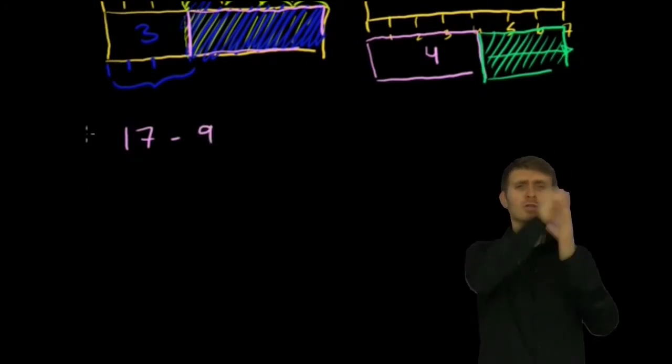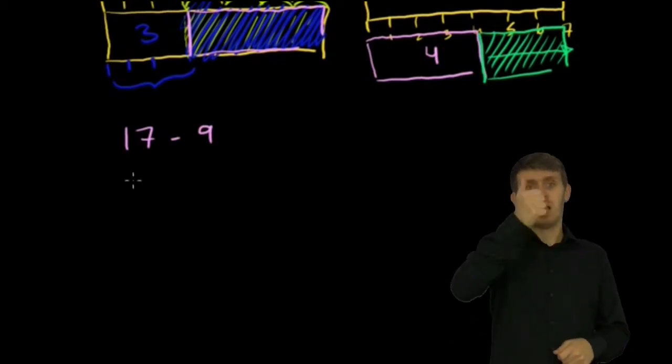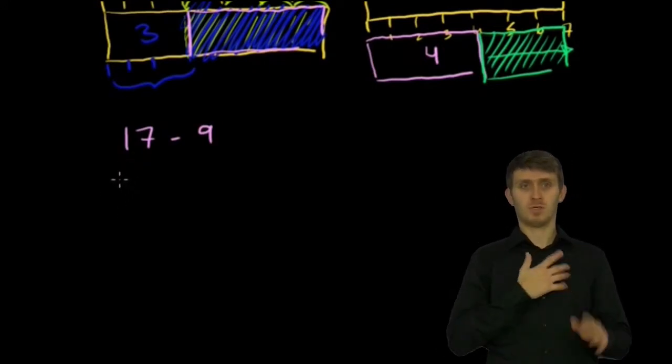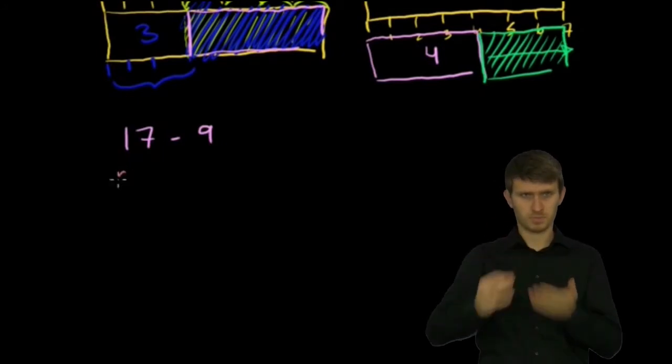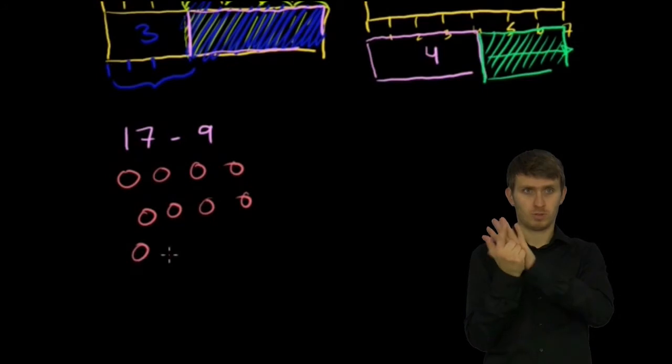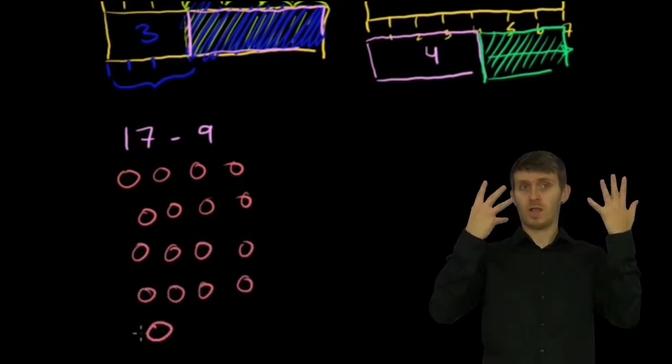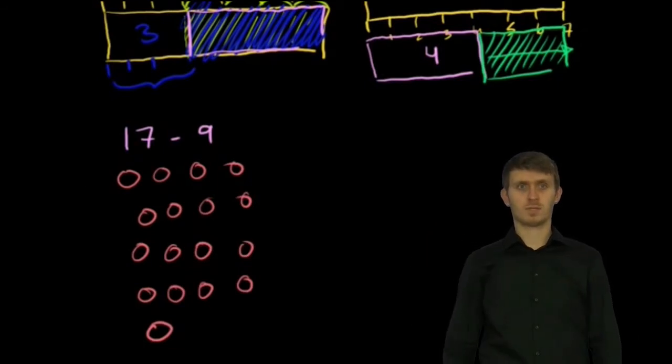So let's do 17 minus 9. So just like everything else, there's two ways we could have done it. The more slow way is you could draw 17 objects. Let's say I have 17 chips: 1, 2, 3, 4, 5, 6, 7, 8, 9, 10, 11, 12, 13, 14, 15, 16, 17.